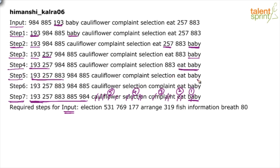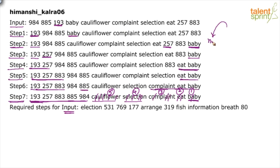In step four, the word eat is fixed before baby. In step five, one more number is moved. In step six, the word complaint is brought to its correct position. In step seven, the number 885 is placed, at which point the numbers are fully arranged and the remaining words — cauliflower and selection — are already in the correct position. Numbers move towards the left, words move towards the right, alternating each step.